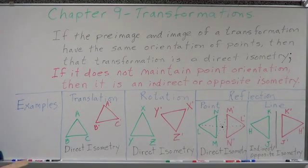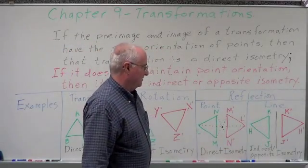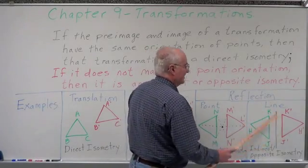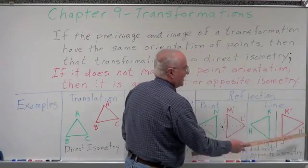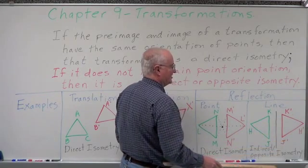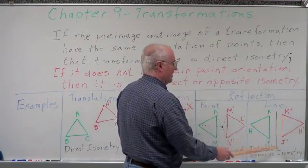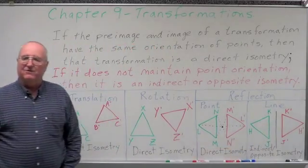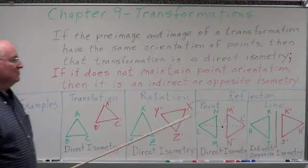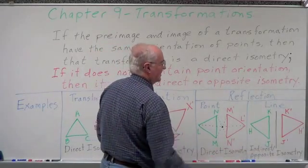Reflection across a point maintains point orientation, making it a direct isometry. But let's look at line reflection. With triangle H, J, K — going to the left I have H, J, K. After reflecting across the line, starting at H and going to the left I get K, then J. So over here I have H, J, K — but over there I have H, K, J. This does not maintain point orientation, so reflection across a line is an indirect or opposite isometry.